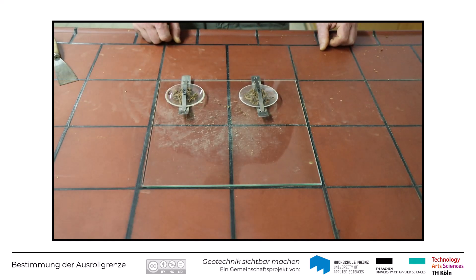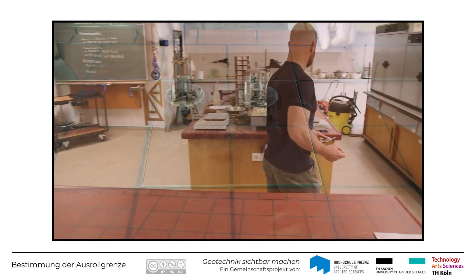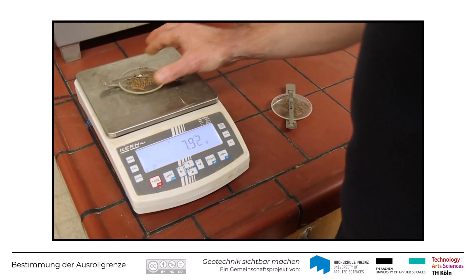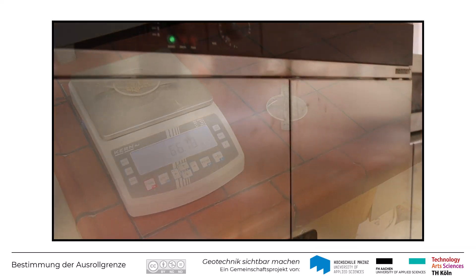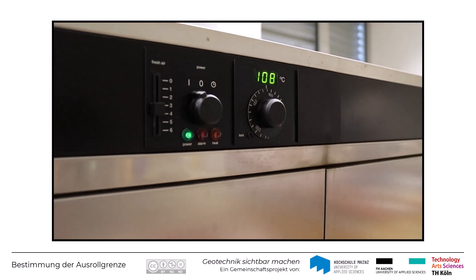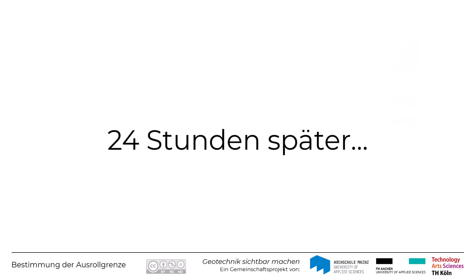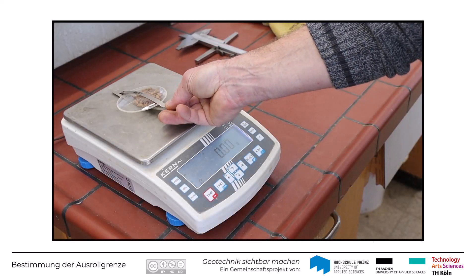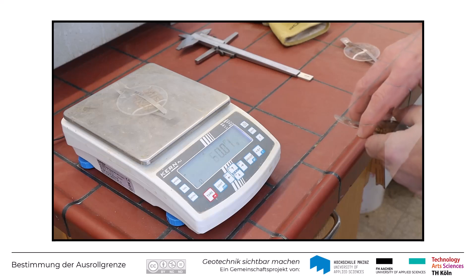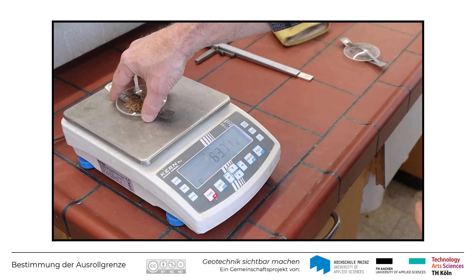Die beiden so zustande gekommenen Mengen an zerbröckelten Probenmaterial werden mit ihren Behältnissen gewogen und dann zur vollständigen Trocknung bei 105 bis 111 Grad im Trockenofen getrocknet. Nach der Ofentrocknung bis zur Massenkonstanz werden die Probenbehälter erneut gewogen und der Wassergehalt kann berechnet werden.